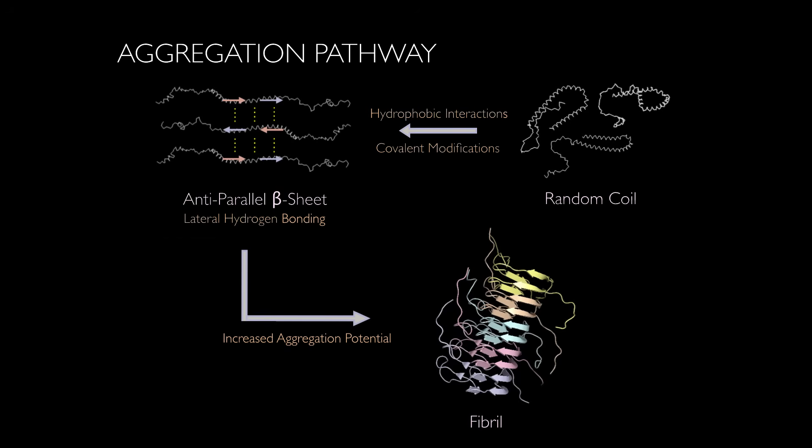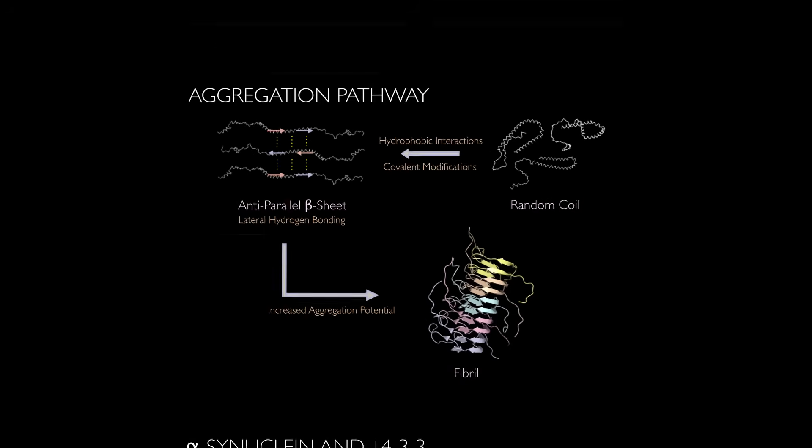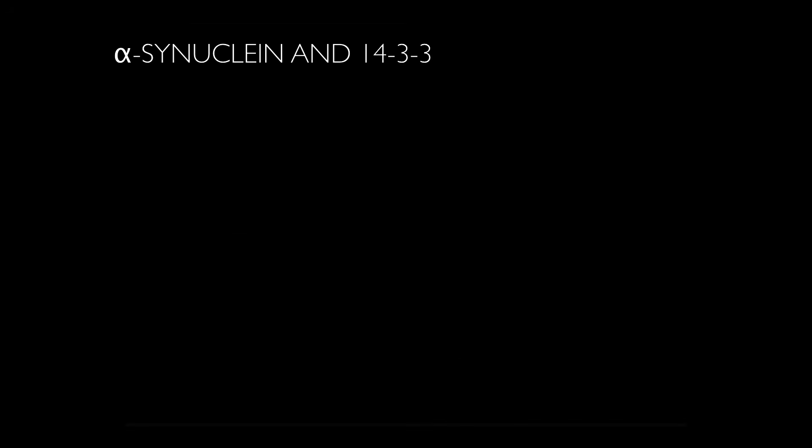But how do alpha-synuclein and its aggregates contribute to PD pathogenesis? One hypothesized mechanism involves alpha-synuclein-mediated regulation of the apoptotic pathway. To begin, there are four primary proteins involved in the mechanism.